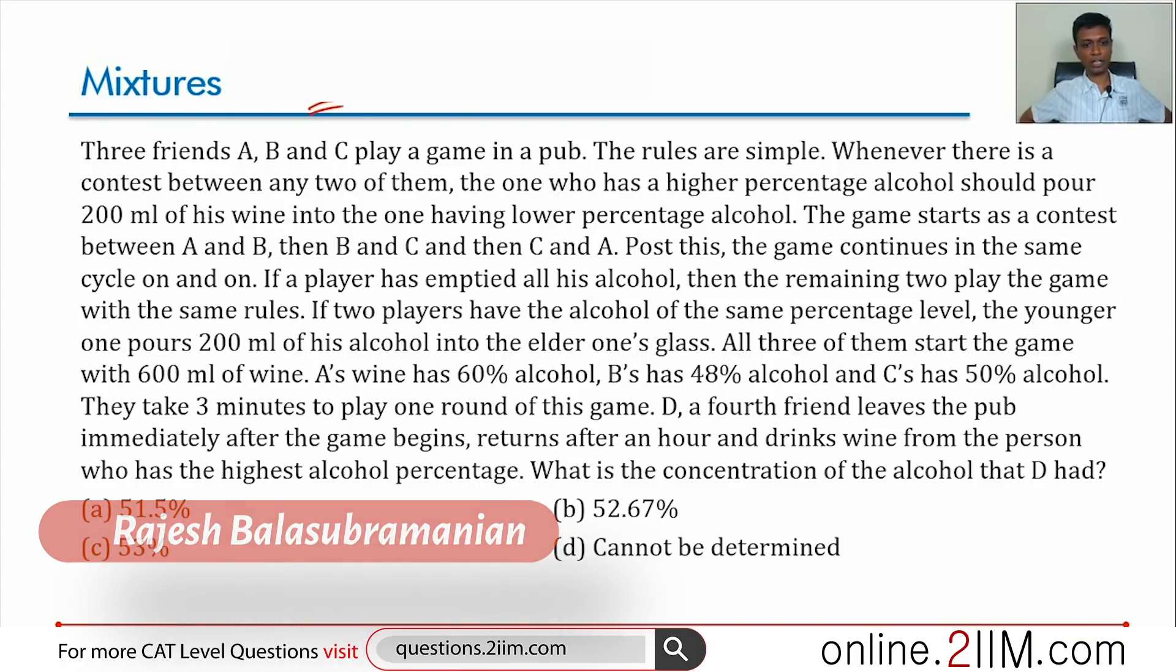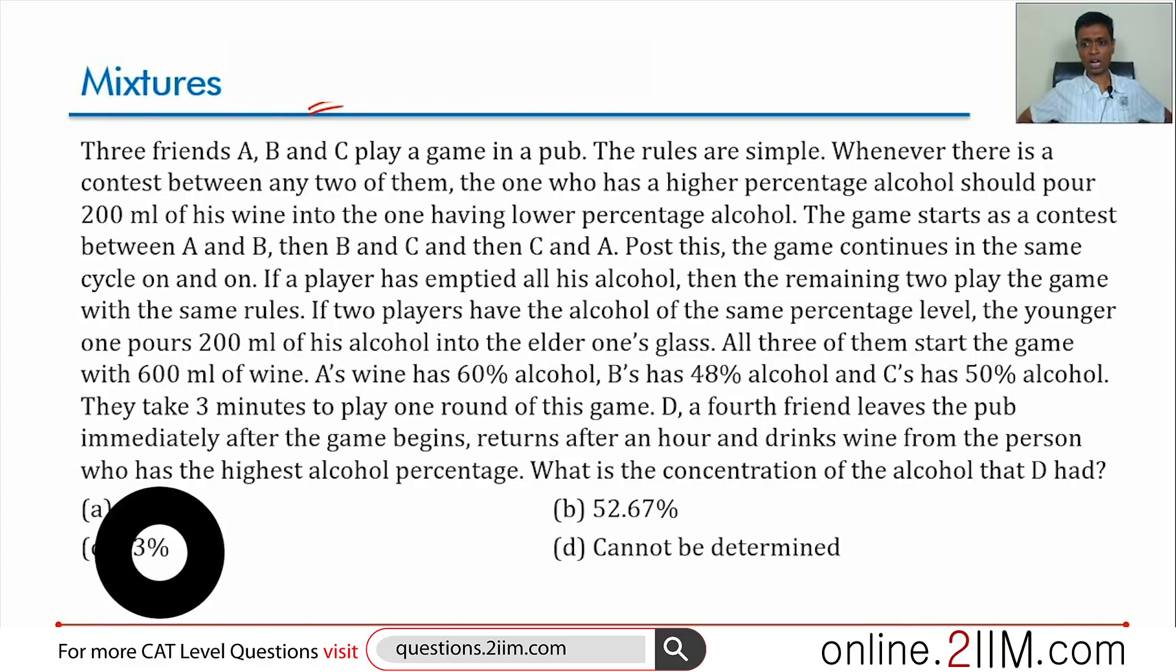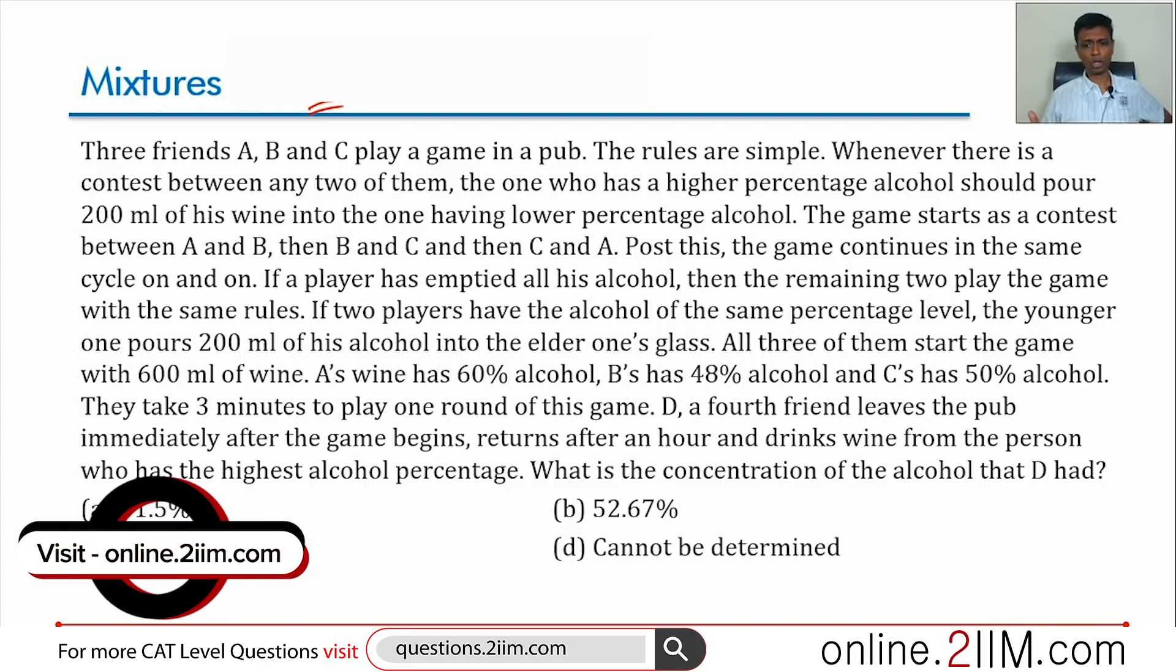a contest between any two of them, the one who has a higher percentage alcohol should pour 200 ml of his wine into the one having lower percentage alcohol. The game starts as a contest between A and B, then B and C, then C and A. This continues the same cycle on and on. If a player has emptied all his alcohol, then the remaining two play the game with the same rules.